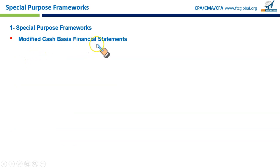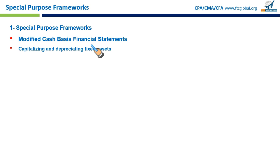Modified cash basis financial statements use a hybrid accounting method combining aspects of both cash basis and accrual basis accounting. This method allows for some adjustments to the simple cash basis approach but still does not go for full accrual accounting.